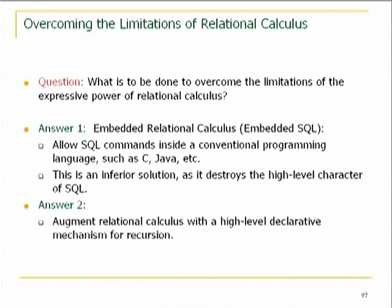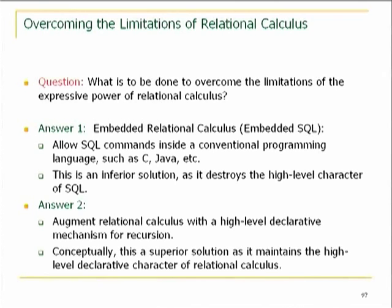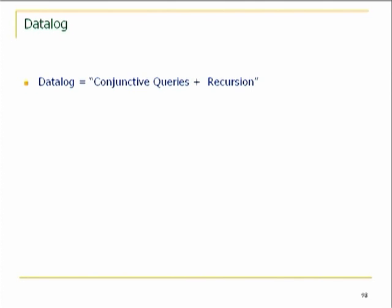The other possibility is to go back to the drawing board and see what we can do to augment the expressive power of calculus — of first-order logic — with some high-level declarative mechanism for recursion. This mechanism has been mentioned here under the name of fixed-point logics. Such a mechanism is superior because it maintains the high-level character of calculus. Datalog is conjunctive queries plus recursion — it's what you get by forcing a marriage between conjunctive queries and recursion.